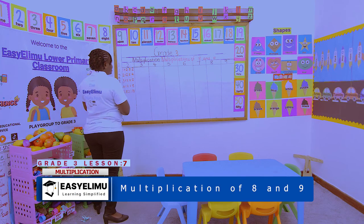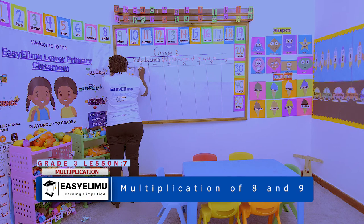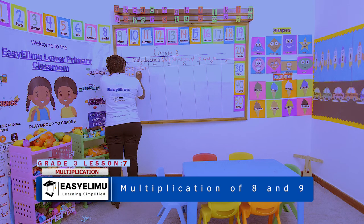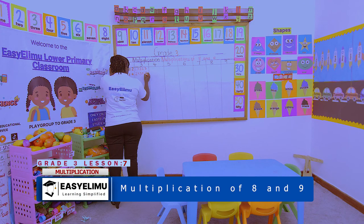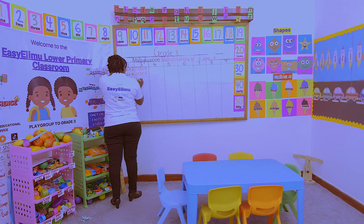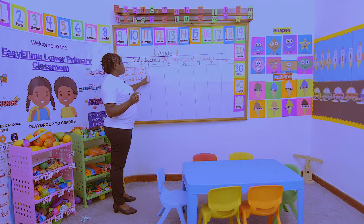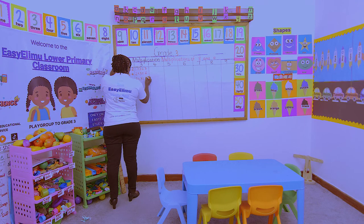Same for 3. 1 × 3 = 3. 2 × 3 is 3 + 3 = 6. 3 × 3 is 6 + 3 = 9. Any number times 1 is that number, then we add 3 each time.